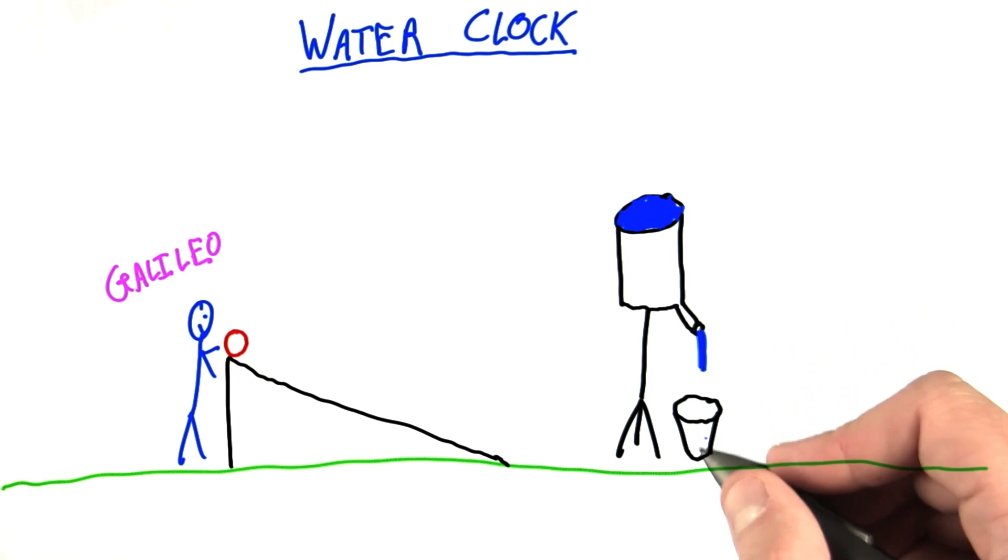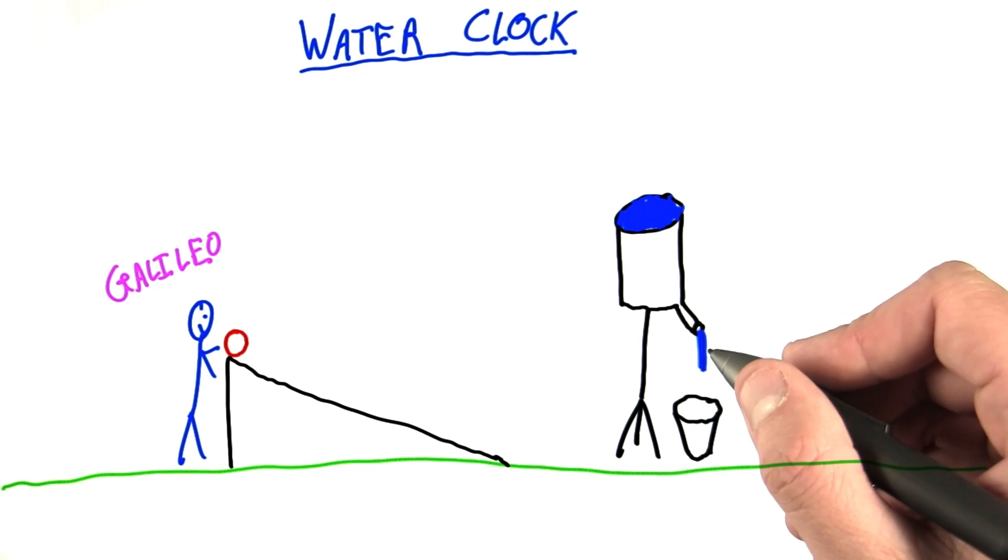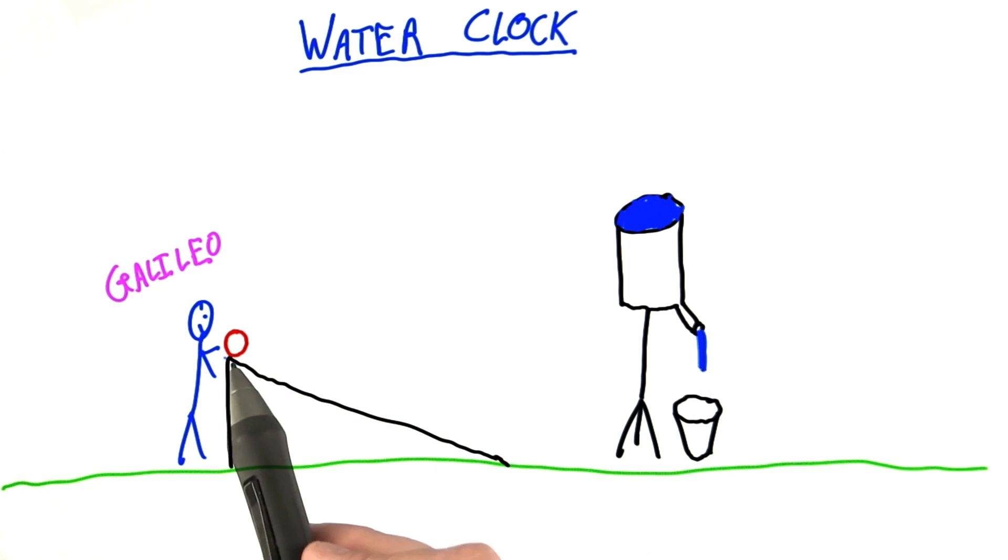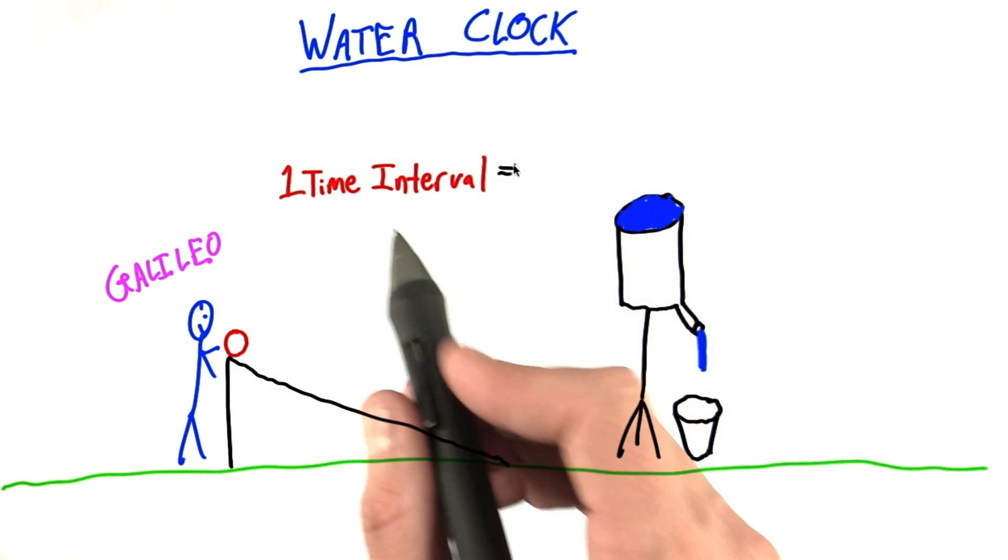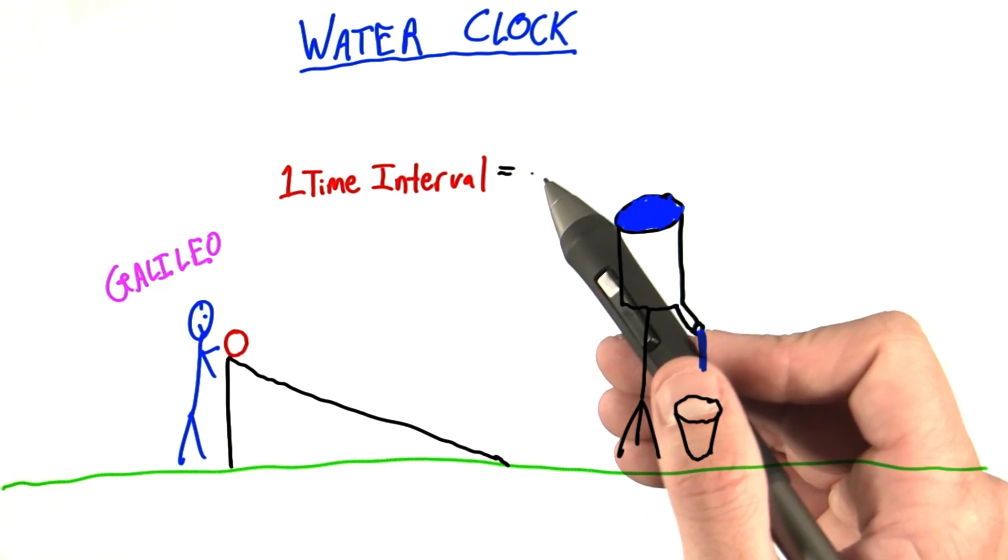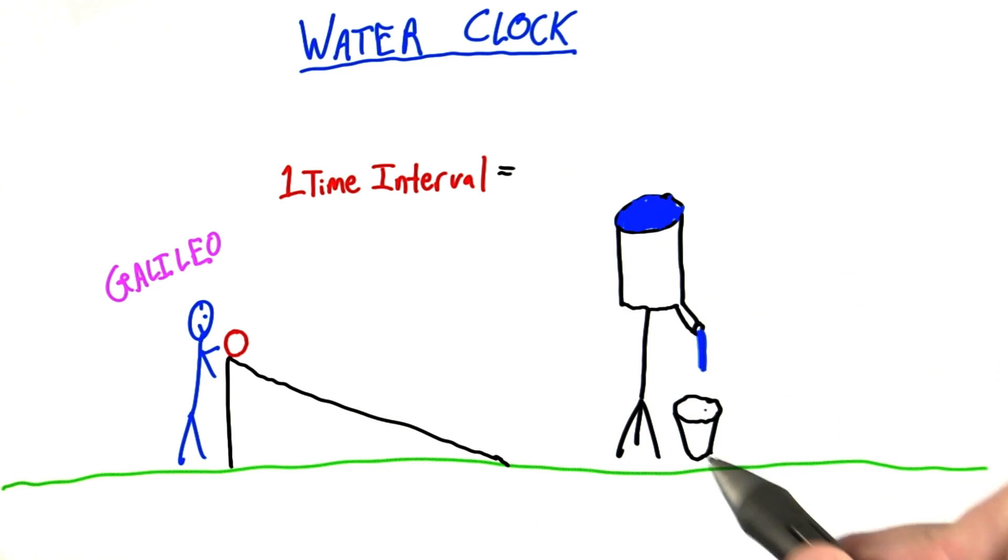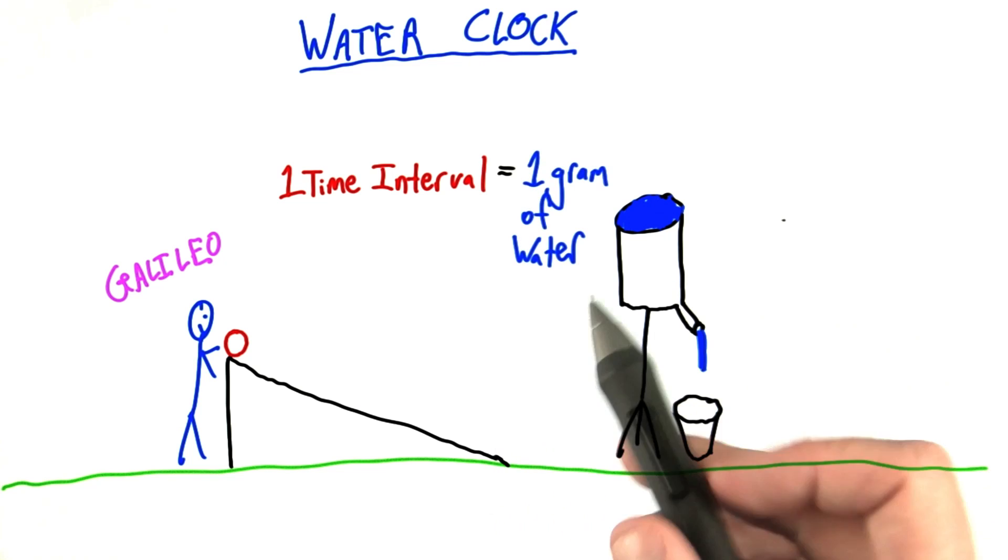By measuring the mass of water he collected in a certain time interval, Galileo could infer how long an object had been moving, let's say rolling or dropping. So let's define something called the time interval. And let's say that one time interval is the amount of time it takes to fill up this bucket with one gram of water.